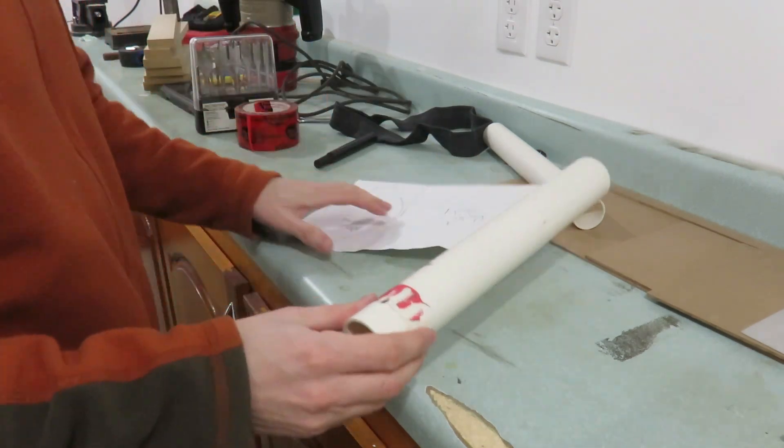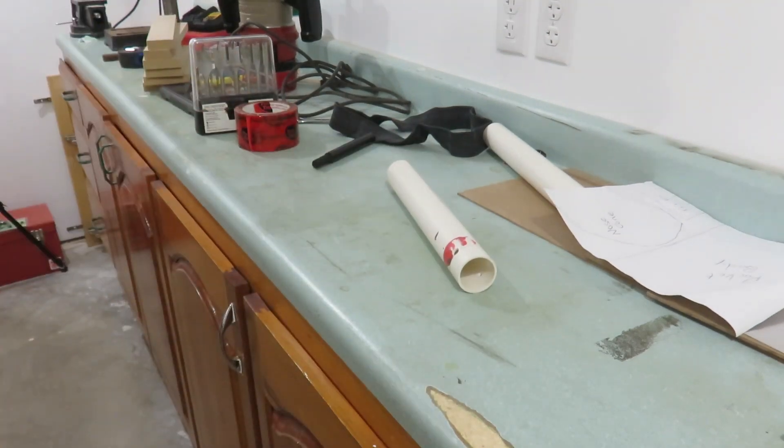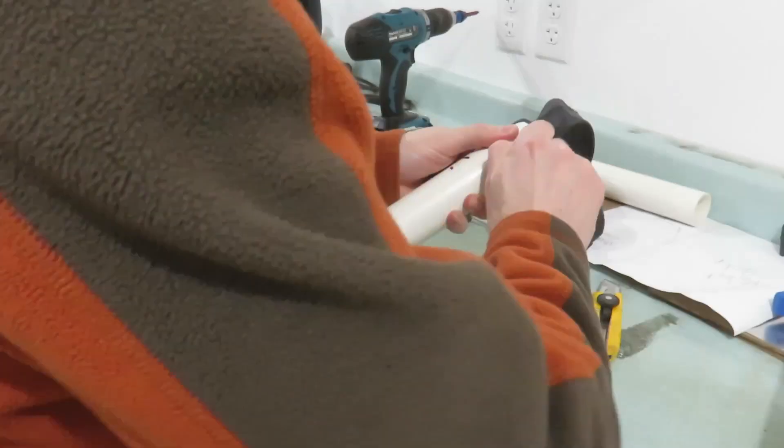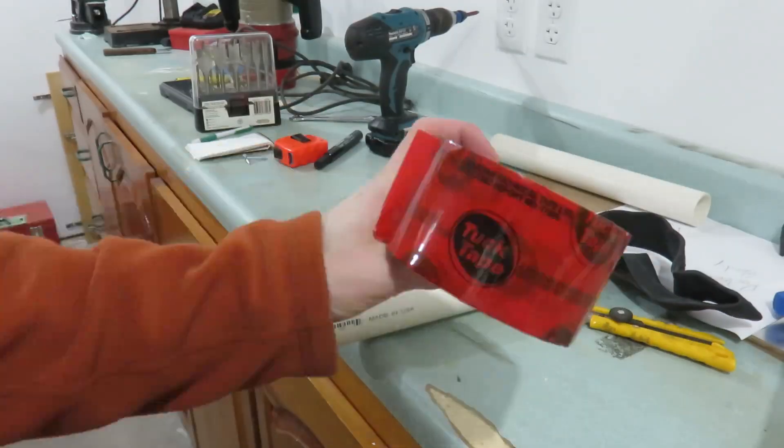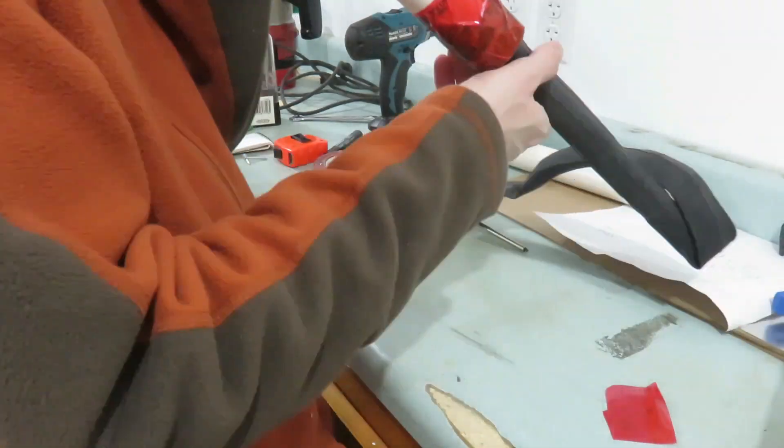I'm using a 12 inch long piece of one and a quarter inch PVC pipe for this project. Pre-drill a hole through the middle of the PVC pipe one inch up from the bottom.